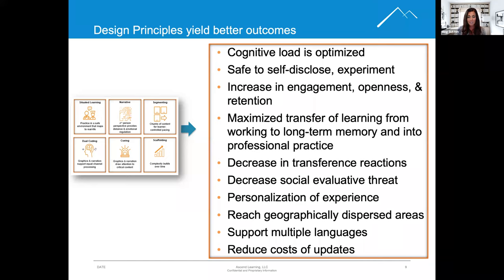Next: it's safe to disclose and experiment. Experimenting allows the learner to make mistakes and to learn from them. This builds confidence without pressure. In our simulations built at NHA, we have also built in undo buttons that really prompt the user to play with the simulation as much as possible and see it from all different angles.